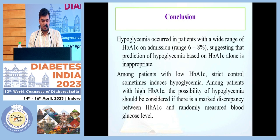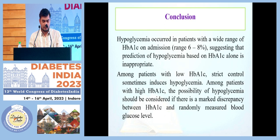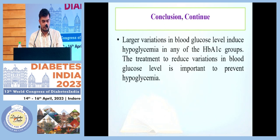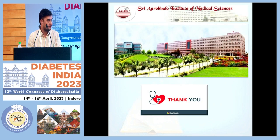Conclusion. Hypoglycemia occurred in patients with a wide range of HbA1C at admission (6–8%), suggesting that prediction of hypoglycemia based on HbA1C alone is inappropriate. Among patients with low HbA1C, strict glycemic control can sometimes lead to hypoglycemia. Among patients with high HbA1C, the possibility of hypoglycemia should be considered if there is a marked discrepancy between HbA1C and randomly measured blood glucose level. Larger variation in blood glucose level can induce hypoglycemia in any HbA1C group; therefore, treatment to reduce this variation is important to prevent hypoglycemia.